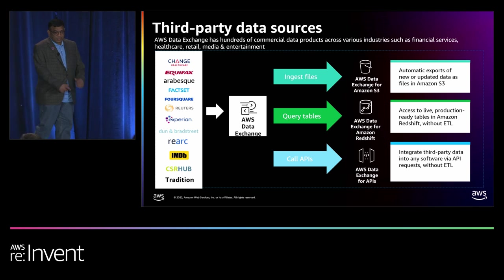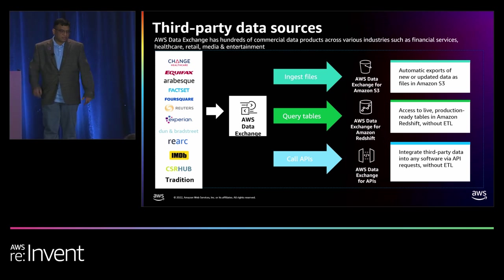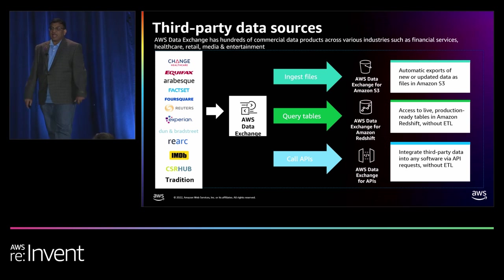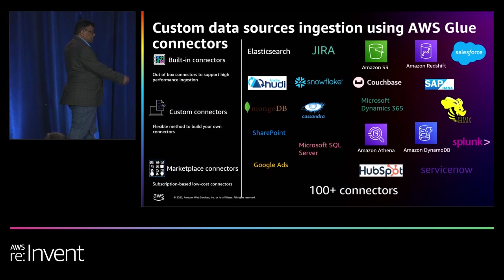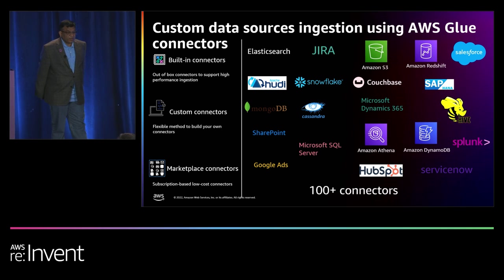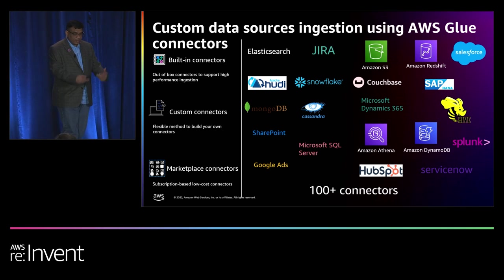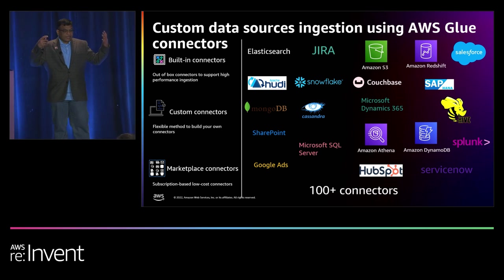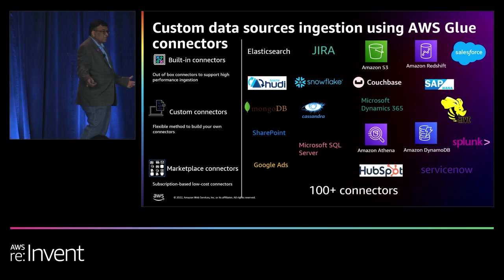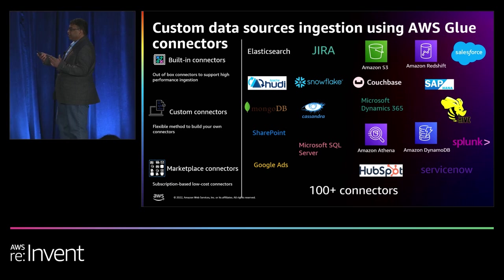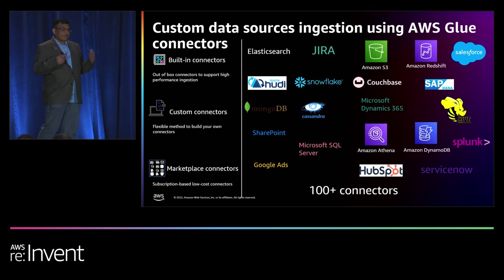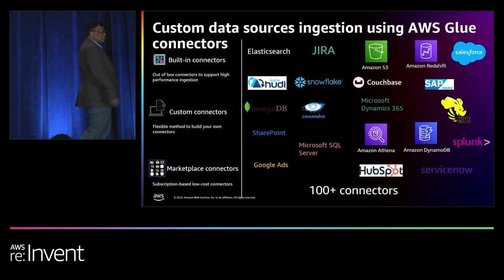AWS Data Exchange includes hundreds of data sets collected from popular public sources and is a fully managed service. You can easily find and subscribe to data products in AWS Marketplace as well. Custom data sources: many organizations are using a wide variety of custom data sources. AWS Glue connectors can discover and integrate with a wide variety of data sources such as SaaS applications or any custom data sources — we have close to 100 plus connectors. You can also look for connectors in AWS Marketplace. AWS Glue custom connectors provide a framework to develop, validate, and deploy your own custom connectors as well.